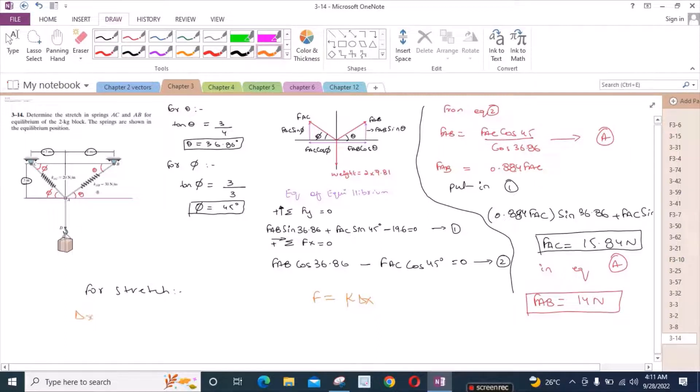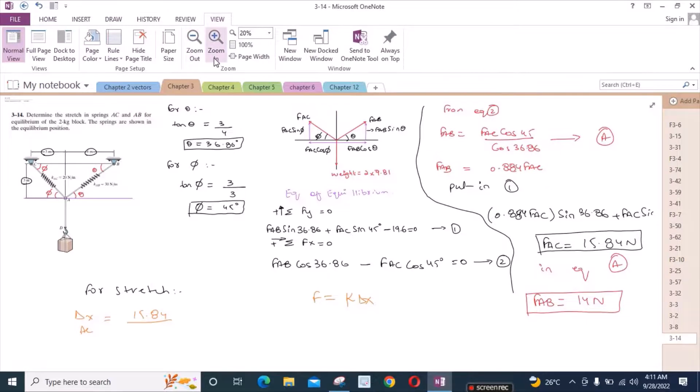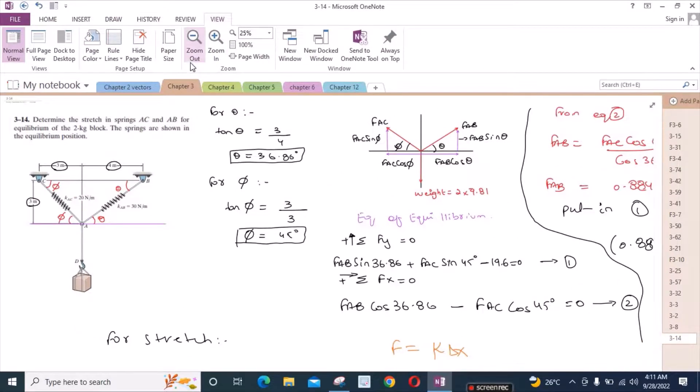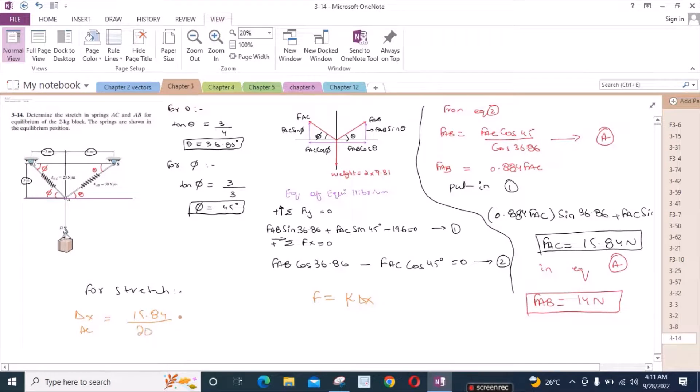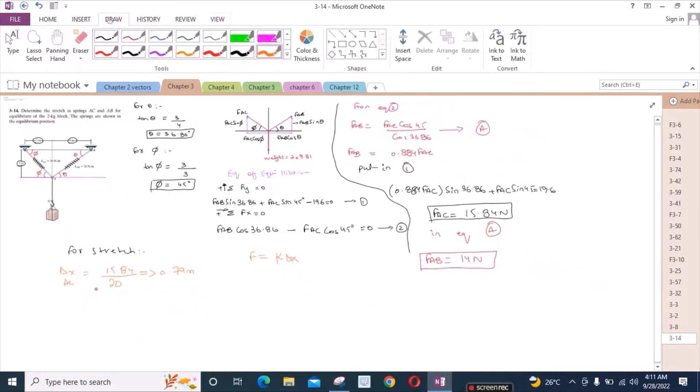We have delta x for the spring AC is equal to FAC, which is 15.84, divided by the spring constant of the spring AC, which in this case is 20 newtons per meter. So from here, stretch is equal to 0.79 meters. And for stretch of the spring AB, we have 14 over the spring constant which is 30, which is equal to 0.467 meters.